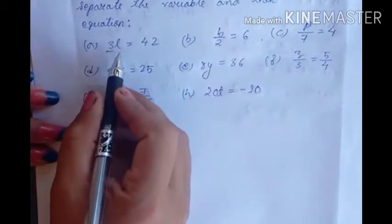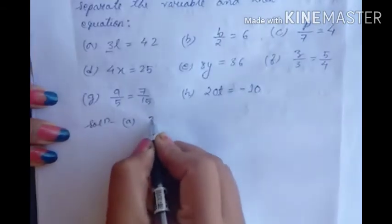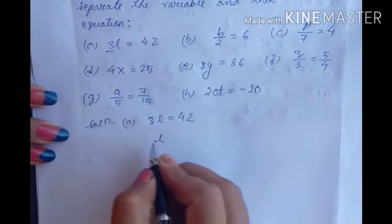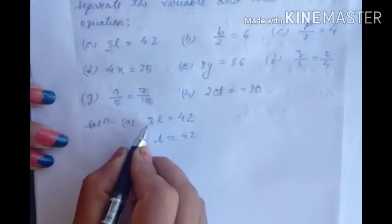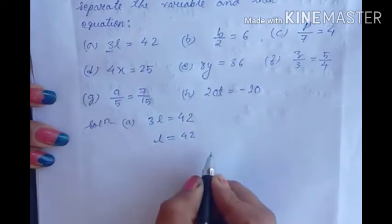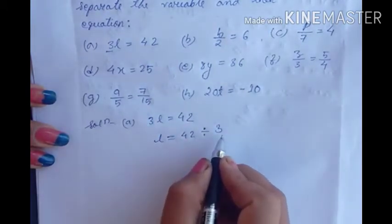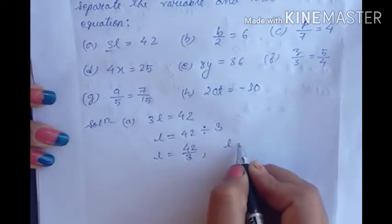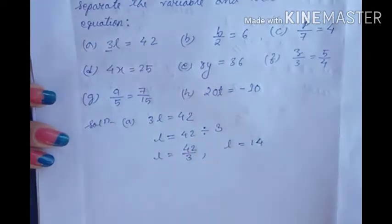Question A: 3L equals 42. That means 3 multiplied by L equals 42. We want to separate the variable. 3 will go to the right hand side, and since it is multiplying on the left, it becomes division on the right. So L equals 42 divided by 3, which gives L equals 14.